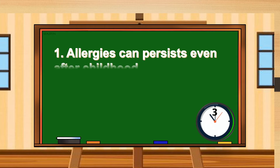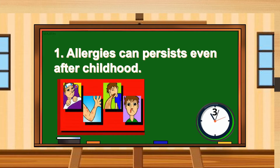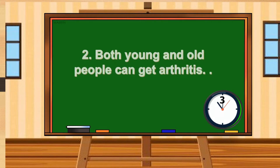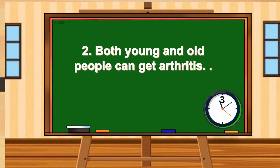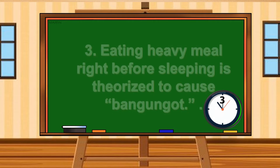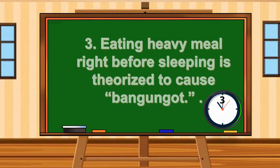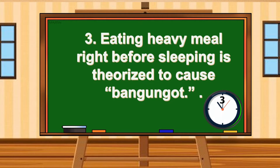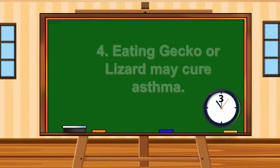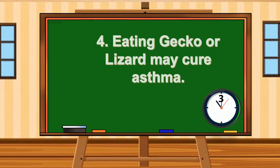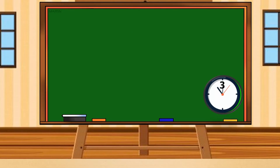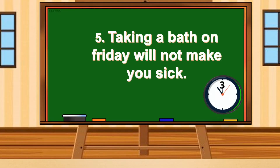Number 1. Allergies can persist even after childhood. Number 2. Both young and old people can get arthritis. Number 3. Eating a heavy meal right before sleeping is theorized to cause bad dreams. Number 4. Eating gecko or lizard can cure your asthma. Number 5. Taking a bath on Friday will not make you sick.